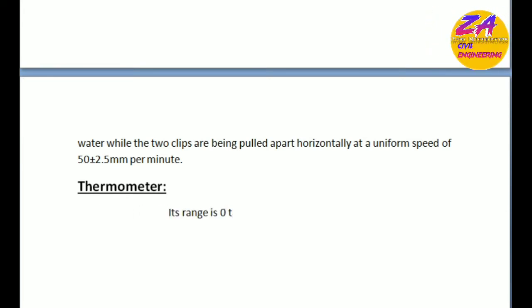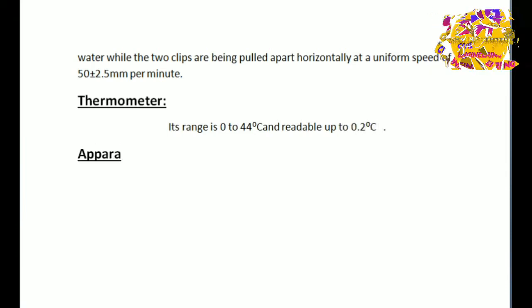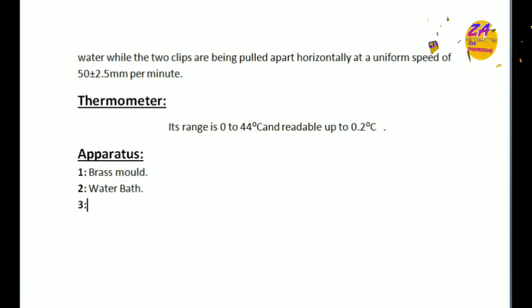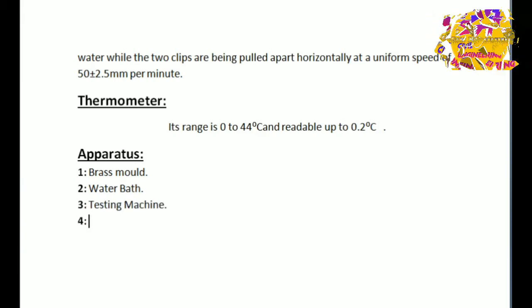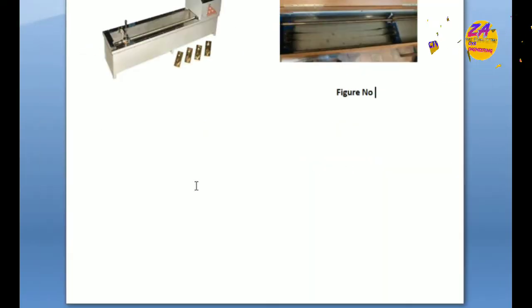Then thermometers—everyone knows about thermometers that are used to calculate the temperature of materials in the field. Its range is 0 to 44°C, readable to 0.2°C. The apparatus, the main parts of this experiment: brass mold, water bath, testing machine, and thermometer. This picture shows on the screen.